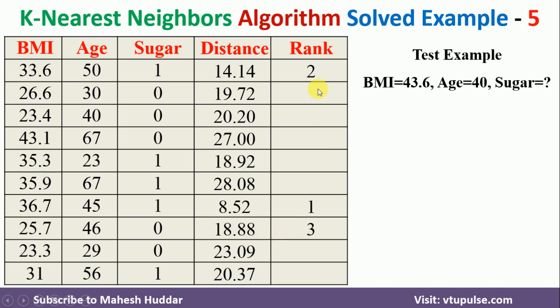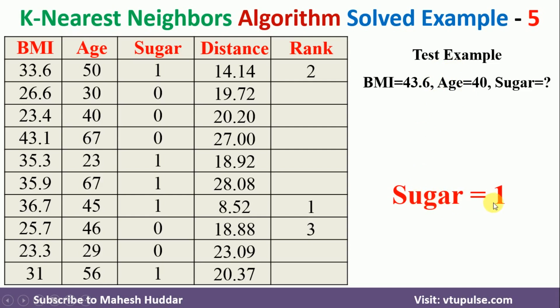Once we find the nearest neighbors, we check the target value for each. For the first nearest neighbor, the target value is 1. For the second nearest neighbor, the target value is also 1. For the third nearest neighbor, the target value is 0. So out of three nearest neighbors, 2 are class 1 and 1 is class 0. Therefore, the new testing example should be classified as 1 — meaning sugar equals 1, the patient is having sugar.